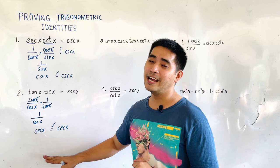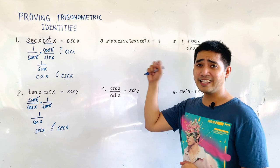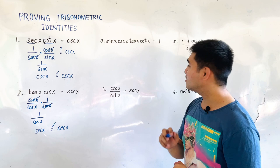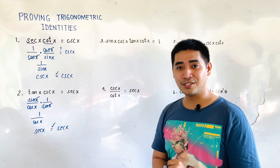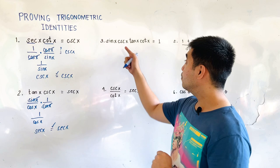Let's move on to problem number 3. We are given sine of x times cosecant of x times tangent of x times cotangent of x is equal to 1. Therefore, which side are we going to choose? The side containing four terms.